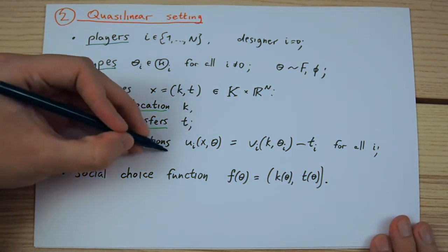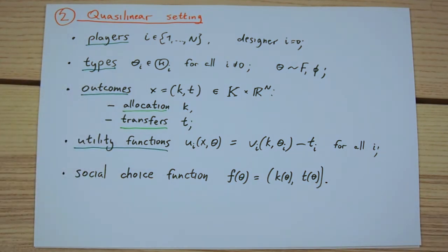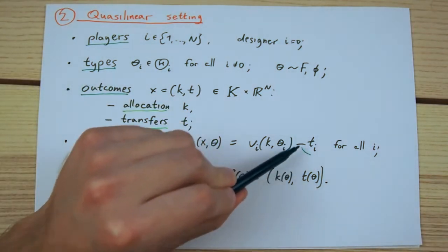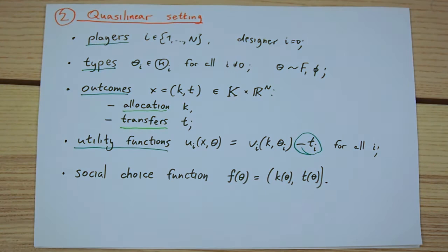The utility functions reflect the introduction of transfers to the setting via this linear term. That is, we assume that all players' utilities are linear in transfers with a marginal utility of 1.